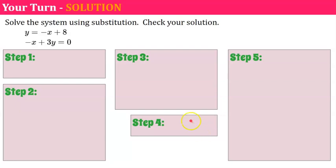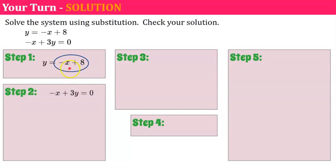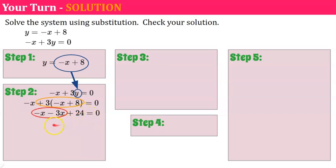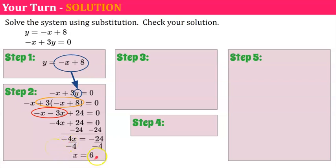Welcome back. I hope you checked your solution in step five and aren't depending on me to check for you. Step one: I'll write down the first equation because y is solved — y equals negative x plus 8. Step two: take that expression and put it in the second equation for y — 3 times (negative x plus 8). Distribute: 3 times negative x is negative 3x, and 3 times 8 is 24. Combine like terms: negative x and negative 3x are negative 4x. Subtract 24 from each side: negative 4x equals negative 24. Divide both sides by negative 4, giving x equals 6.